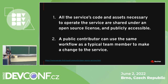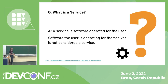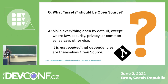First question: what is a service? A service is software operated for the user; software the user is operating for themselves is not considered a service. Next: what assets should be open source? The answer is: make everything open by default except where law, security, privacy, or common sense dictates otherwise. It's not required that dependencies of the service — whether deployment dependencies or other connected services — are themselves open source for the service to be open source.